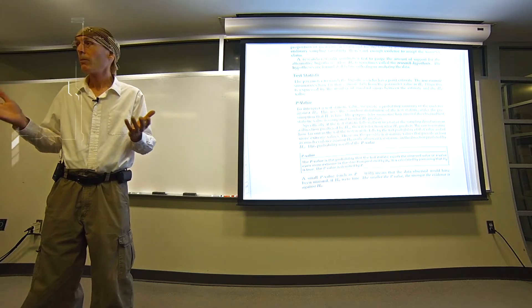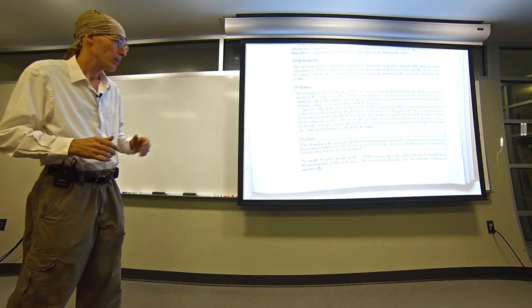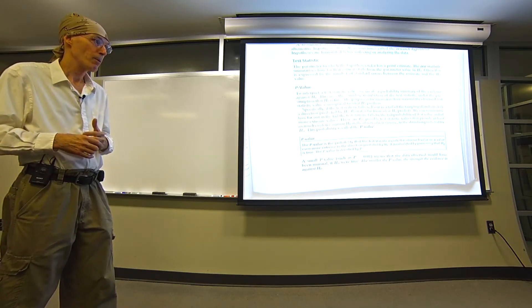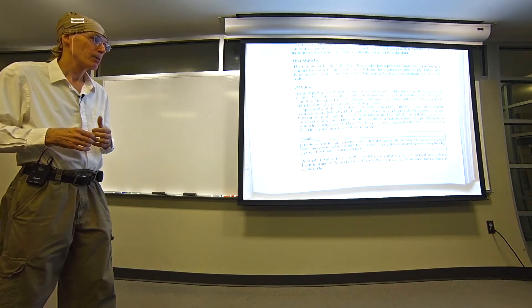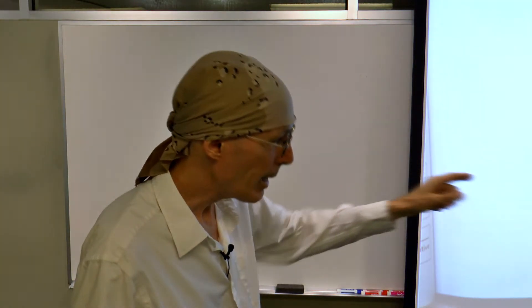So hypotheses always come in two types. Then we also have a statistic — we have to have a formula for something that will tell us whether the alternative or the null hypothesis is going to be accepted. So we have to have a test statistic. We also have to have a p-value, which is really interesting. R will print those p-values out for us. They are probability values — the p-value is the probability that the test statistic equals the observed value or a value even more extreme in the direction predicted by the alternative hypothesis.